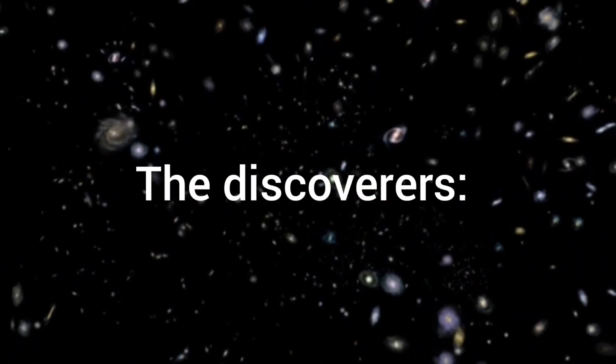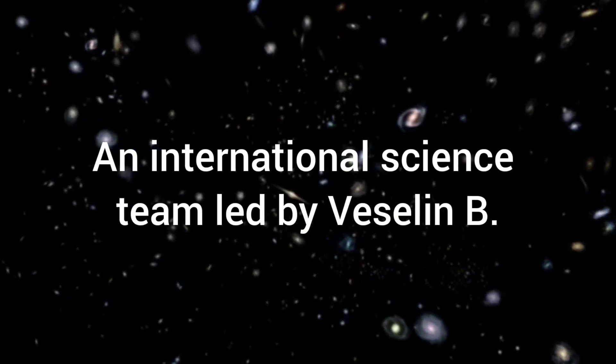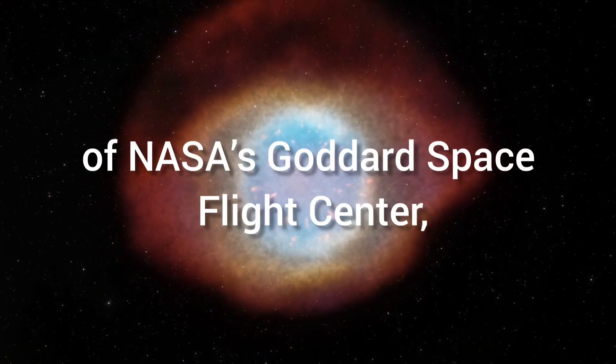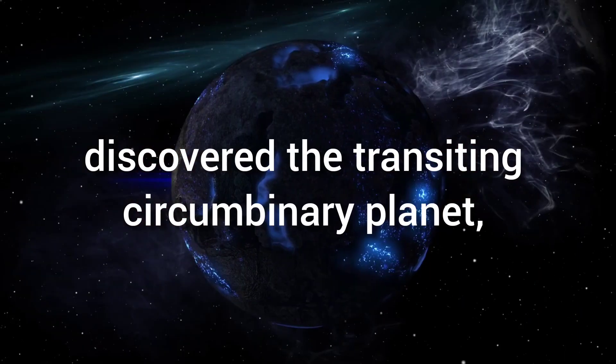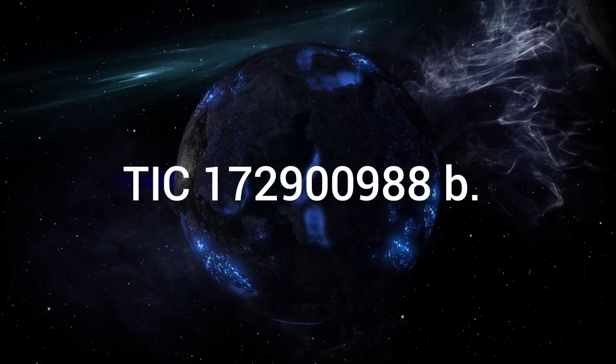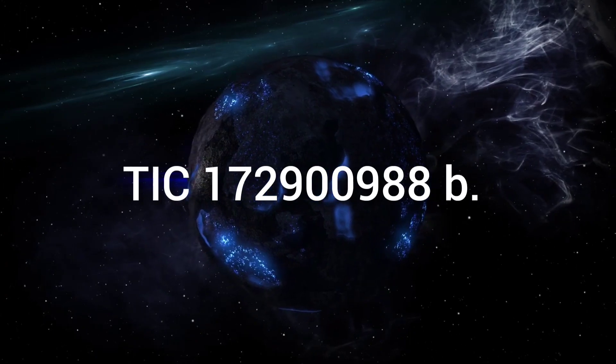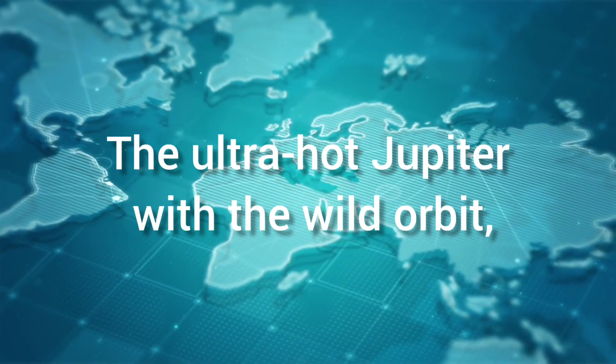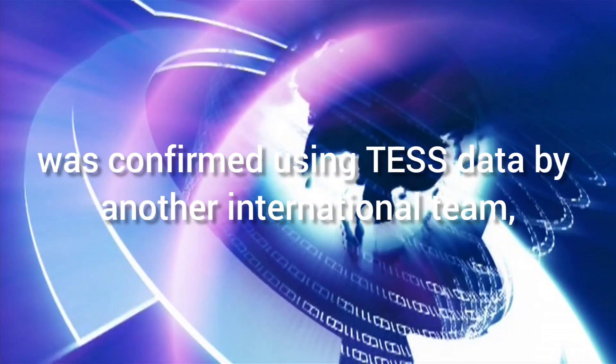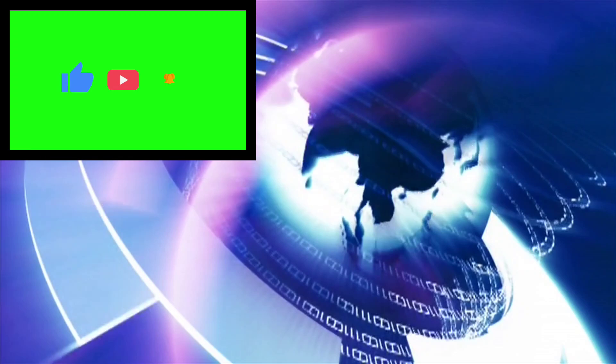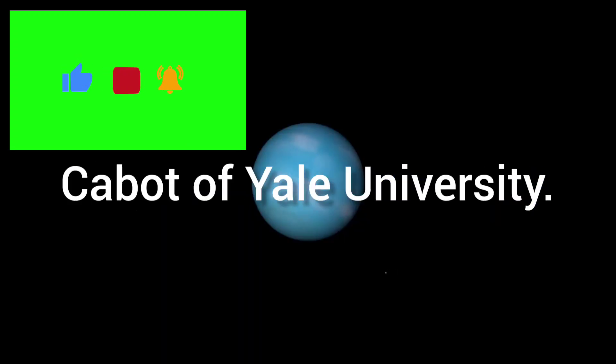The discoverers, an international science team led by Veselin B. Kostov of NASA's Goddard Space Flight Center, discovered the transiting circumbinary planet TIC 172900988b. The ultra-hot Jupiter with the wild orbit, TOI 1518b, was confirmed using TESS data by another international team, this one led by Samuel H. C. Cabot of Yale University.